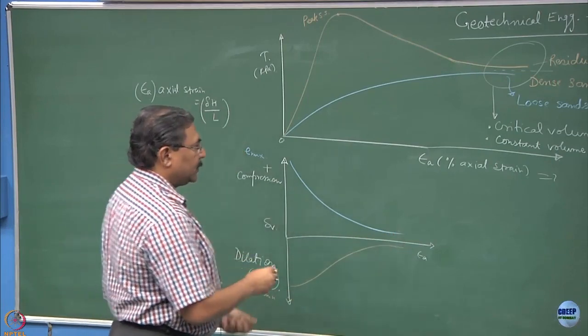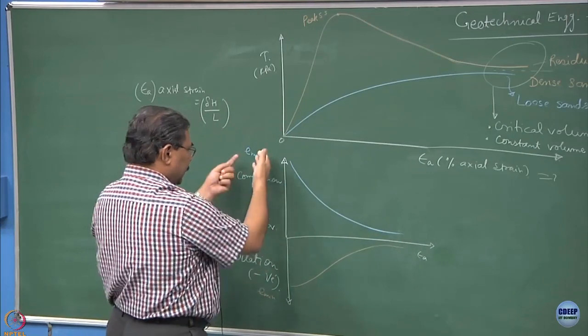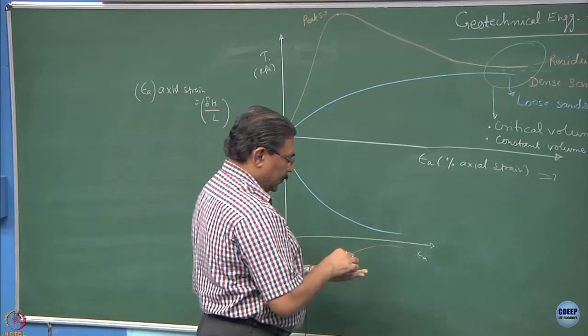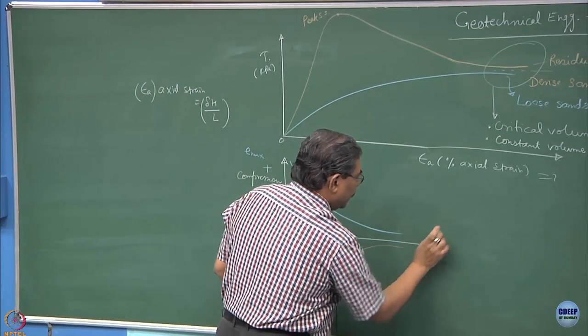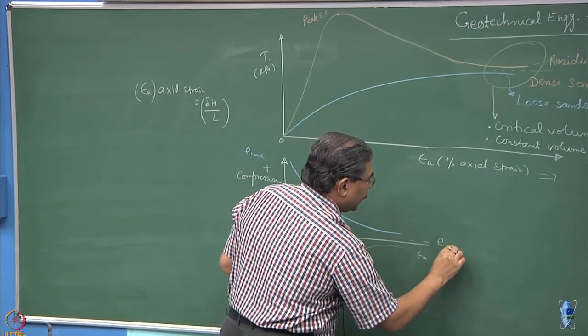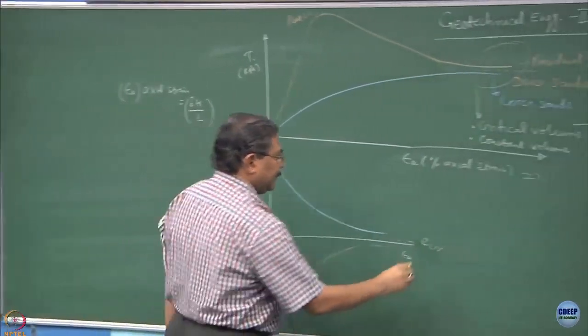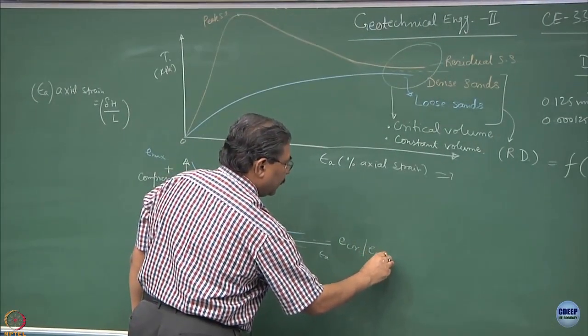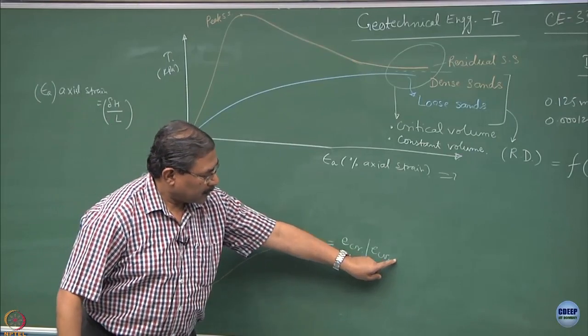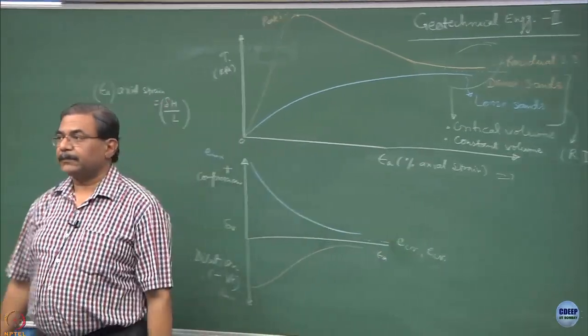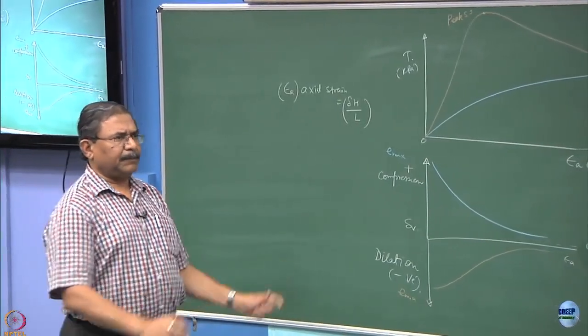Now this is what is known as a scale of E. If I plot because E is related to the compression and dilation, this becomes E critical. This value becomes E critical. Sometimes we also define this as ECV, void ratio corresponding to constant volume. This is a typical response.